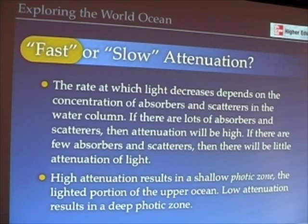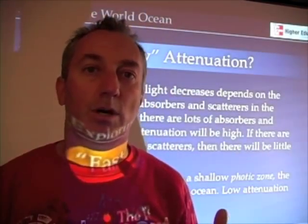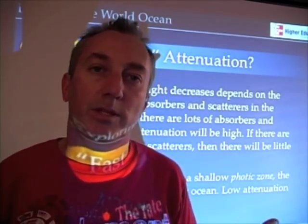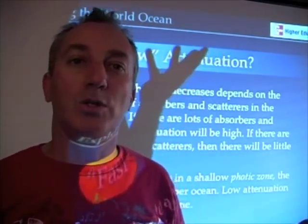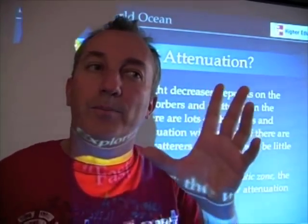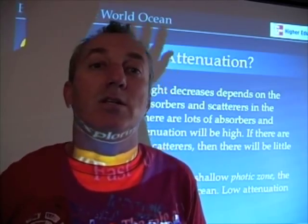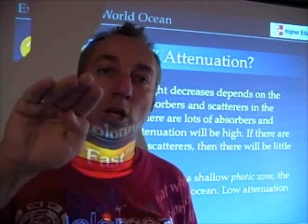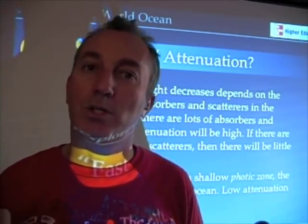How fast or slow light diminishes depends on how much material is in the water. If you have a lot of phytoplankton or silt and clay, light won't penetrate very deeply. In very clear water — like the middle of the South Pacific, where you see beautiful cobalt blue water with little suspended material — light penetrates very deeply. The Mediterranean Sea is also well known for its clear blue water. The Beer's Law curve depends on the concentration of absorbers and scatterers.